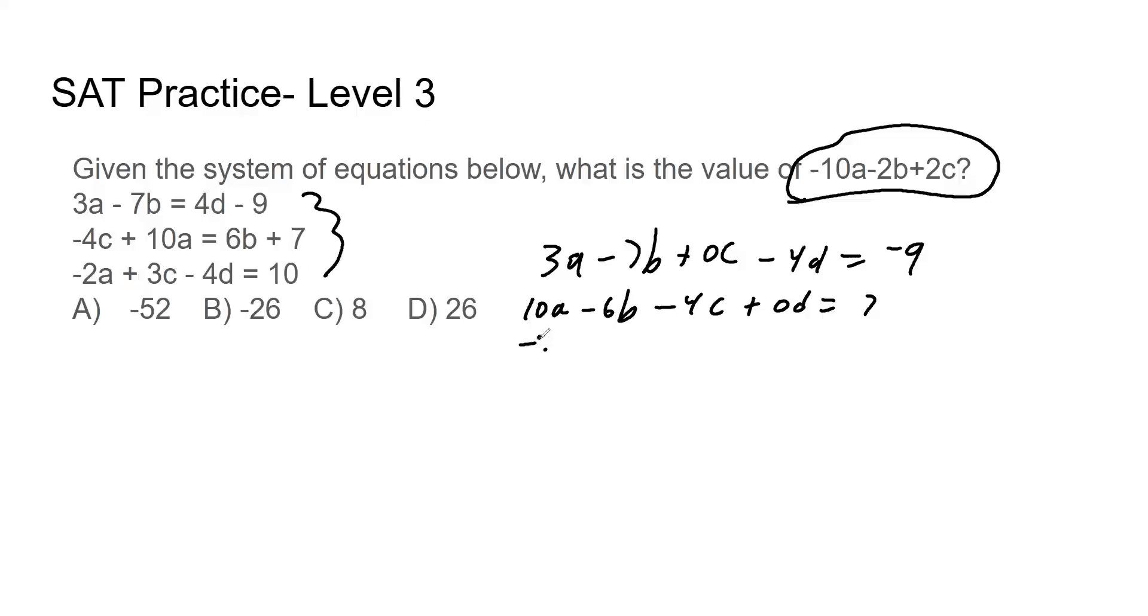There's no B, so I'll do plus 0B. There's a plus 3C. There's a minus 4D. So notice I've just got all the A, B, C's and D's lined up equals 10.